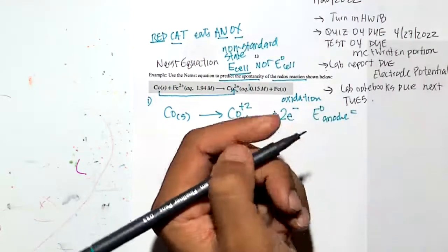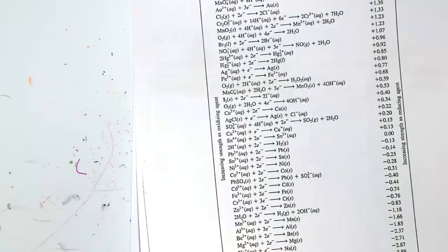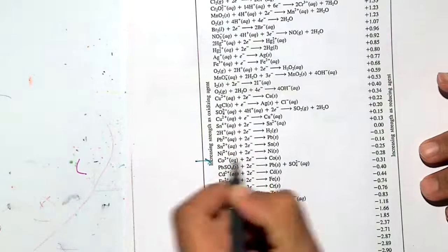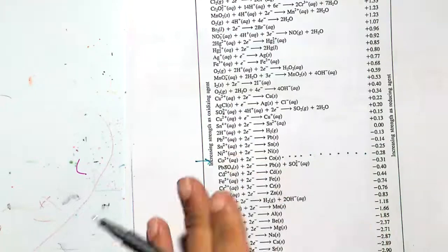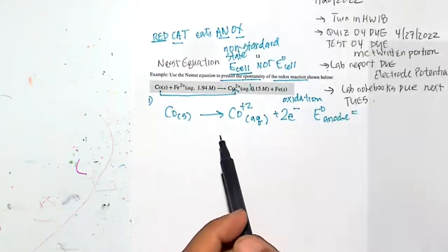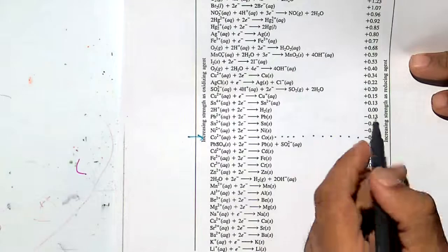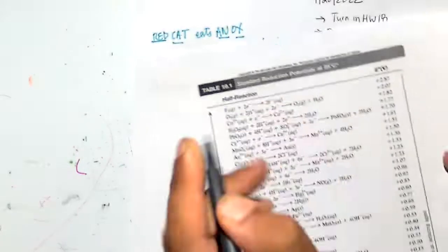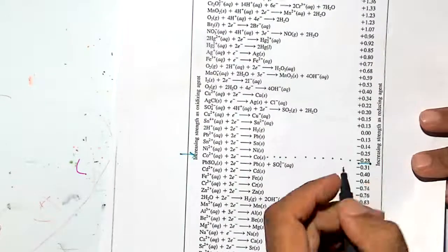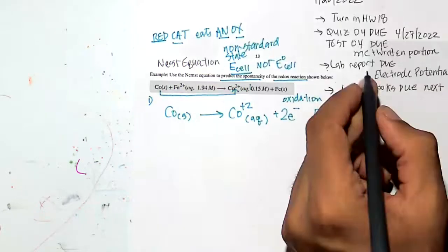Let's check out the voltage associated with cobalt — you should bring this reference sheet to your exam. The table gives the reduction potential, so since cobalt solid going to cobalt 2+ plus two electrons is an oxidation (anode), we need to flip it. When we flip it, it's +0.28 volts. All values in the table are reductions; flipping gives oxidation. So positive 0.28 volts for the anode.